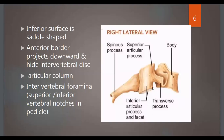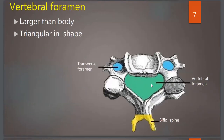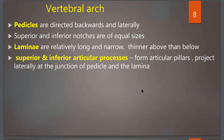The intervertebral foramen is formed by the inferior vertebral notch of the vertebra above and the superior vertebral notch of the vertebra below joining together, which passes spinal nerves. The vertebral foramen is quite larger than the body and is triangular in shape. It is so big because it has to allow the spinal cord to pass and accommodates the cervical enlargement of the spinal cord, hence it is quite wide compared to other parts of the vertebral column.